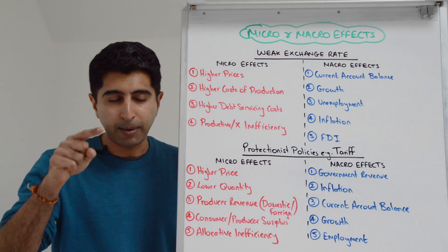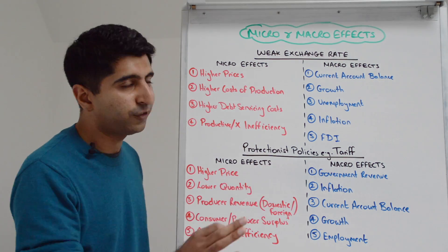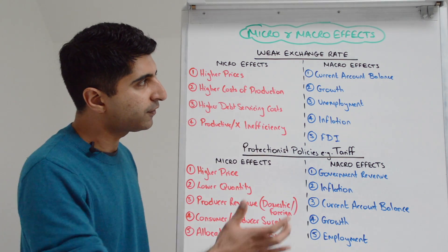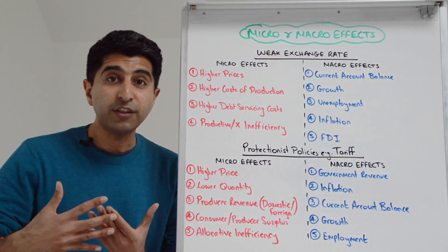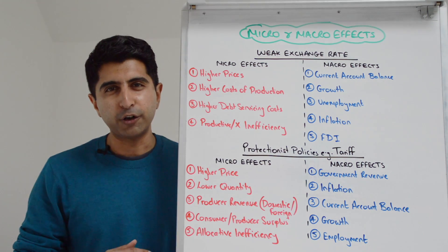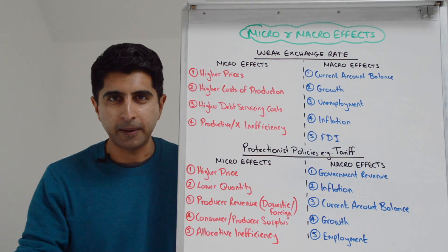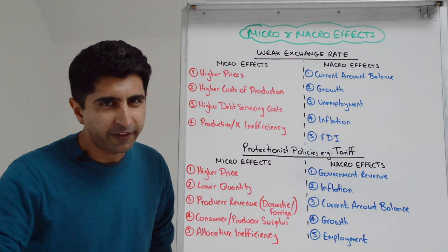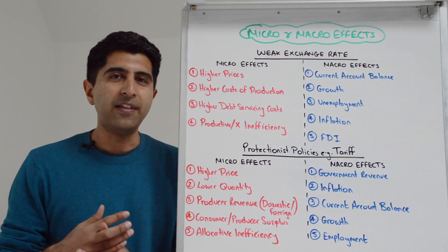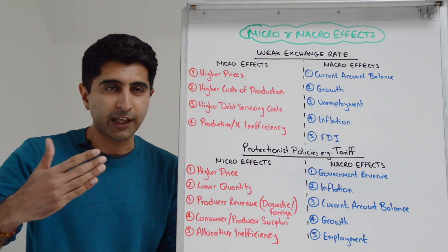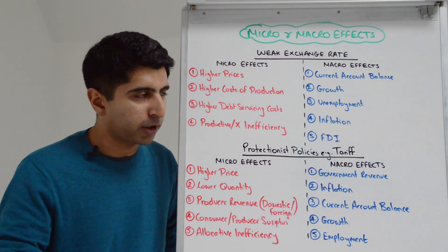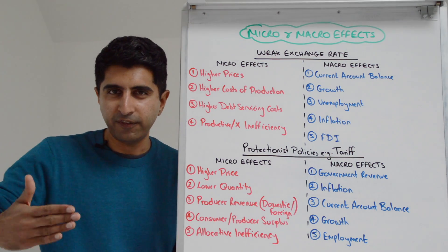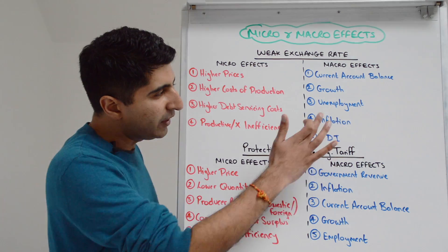Let's dive in first by looking at the micro and macro effects from a weak exchange rate. The natural place to go first is the macro effects. From a weak exchange rate, we know there should in theory be an improvement in a country's current account balance — more expensive imports and cheaper exports should improve the current account position. As a result, net exports in the AD equation can rise, AD can increase, taking us to higher economic growth, lower unemployment, but also higher demand-pull inflation as AD shifts to the right.